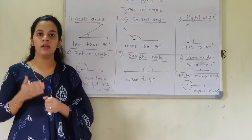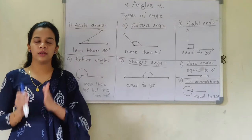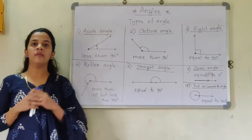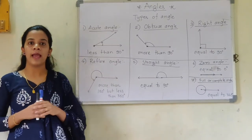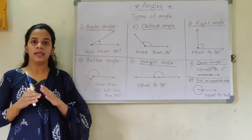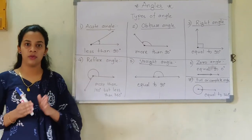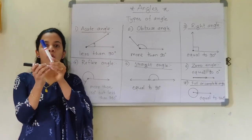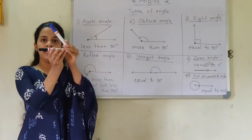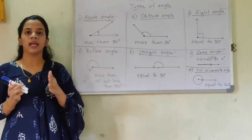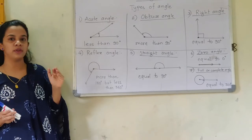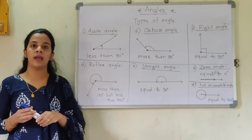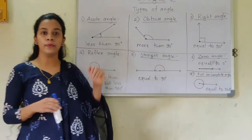Why did I start with zero angle? We will proceed further in terms of degrees. So zero angle — by the name itself you should understand — it measures 0 degrees. Now we start with our basic: the acute angle. What is acute angle? The angle which measures less than 90 degrees. This we have already studied. Suppose these are the 2 arms — if we hold them like this, you can see it is less than 90. These types of angles are said to be acute angles.